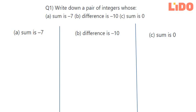Today's question is write down a pair of integers whose a sum is minus 7, b difference is minus 10 and c sum is 0. Let's start with the first one.